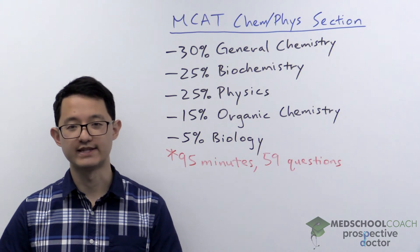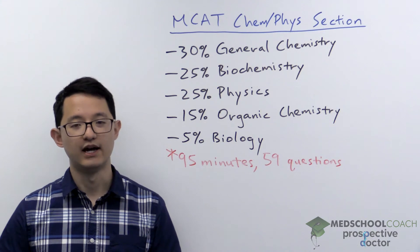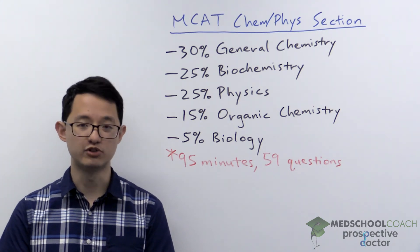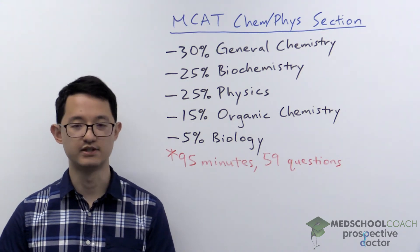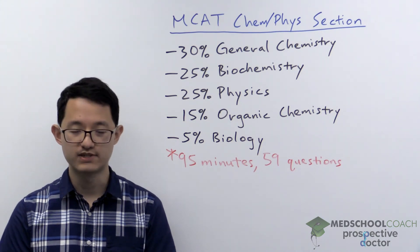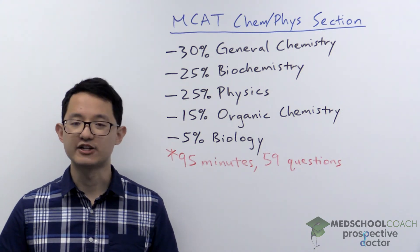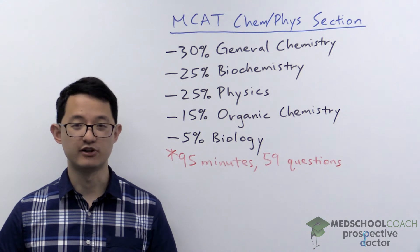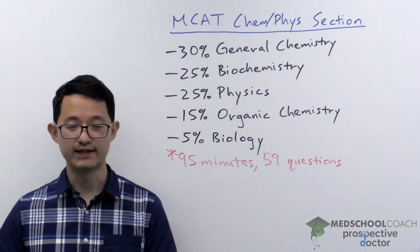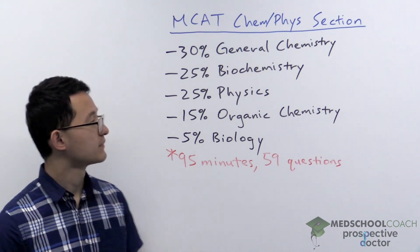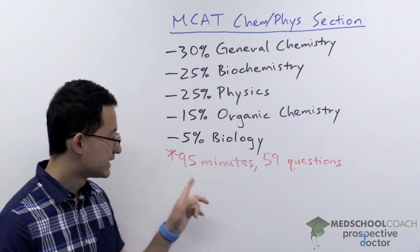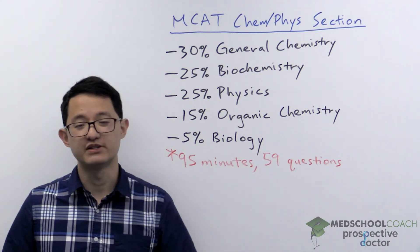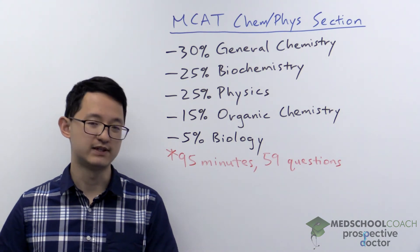A third reason why the ChemPhys section is challenging is that there's a luck aspect. The MCAT covers two semesters of physics: first-semester Newtonian mechanics — kinematics, forces, work and energy, fluids, waves, and springs — and second-semester electricity and magnetism — electrostatics, magnetism, light, mirrors, and lenses. However, physics is only 25% of this section. The ChemPhys section is 95 minutes long with 59 questions, so a quarter of that is only about 14 to 15 physics questions, which can't cover all those topics.